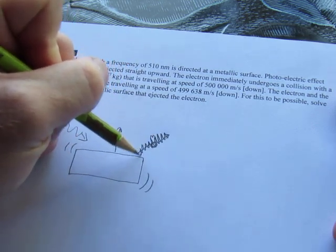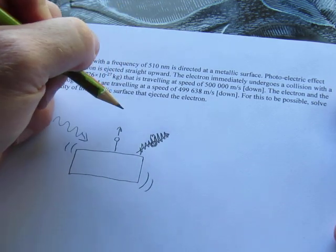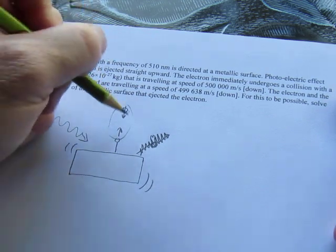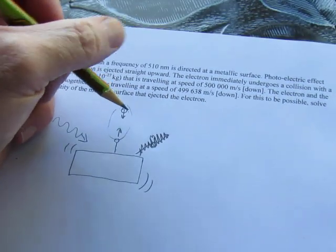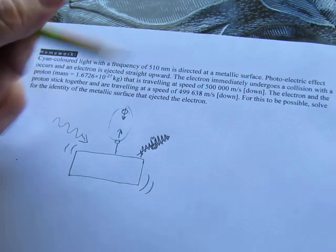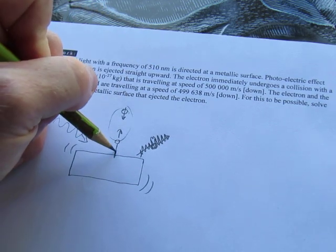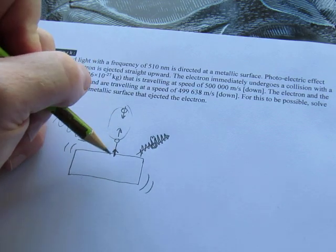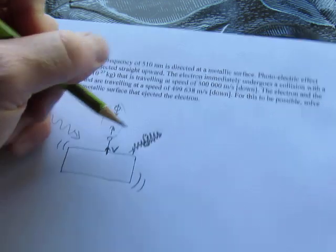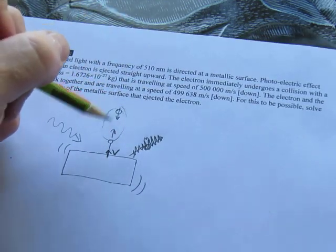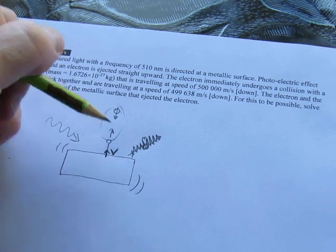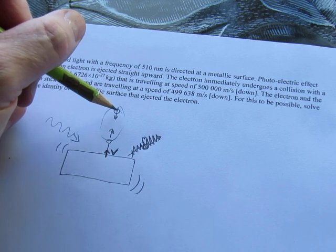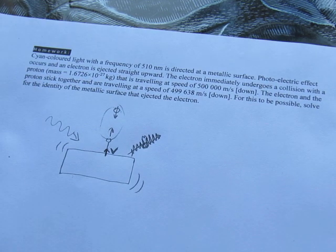It gets ejected straight up into the air and immediately it undergoes a collision with a proton traveling down towards it. This is where we're going to start because you can't do this entire question until you know this. You need to know the instantaneous speed at which the electron gets ejected off the metal because you're going to need that for the photoelectric calculation.